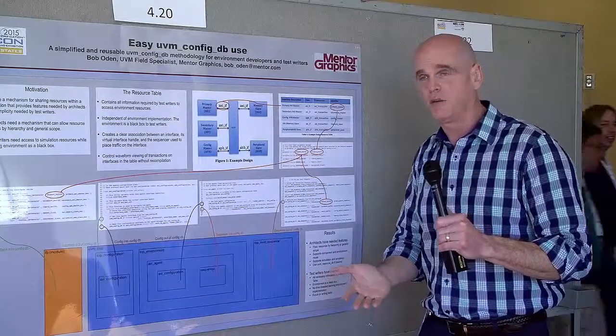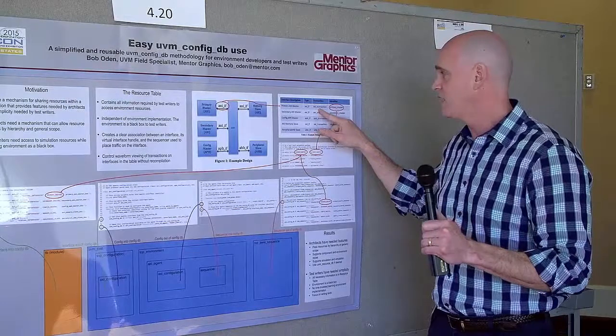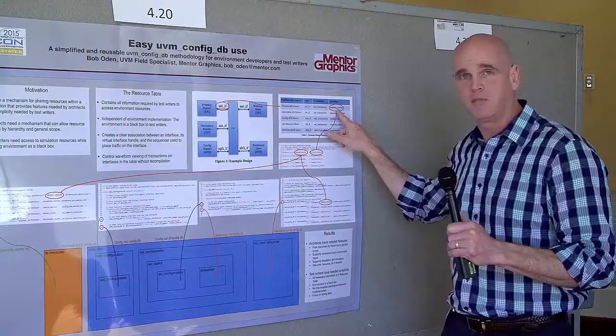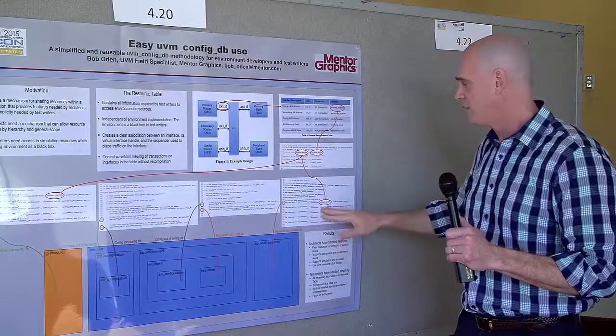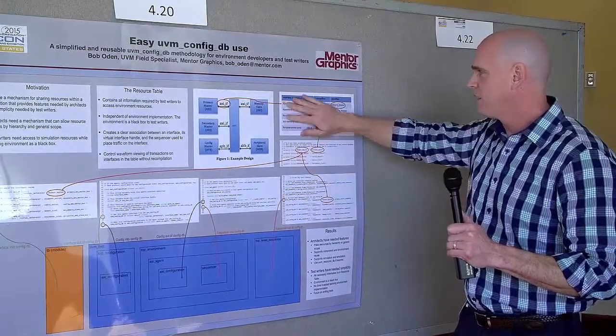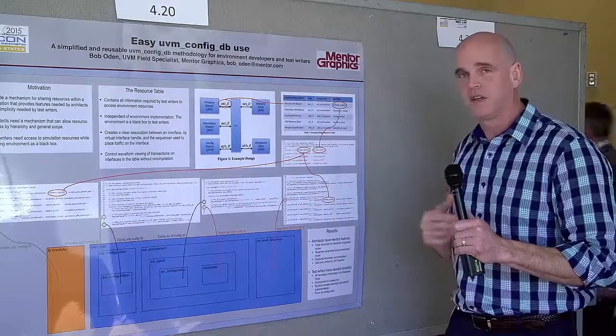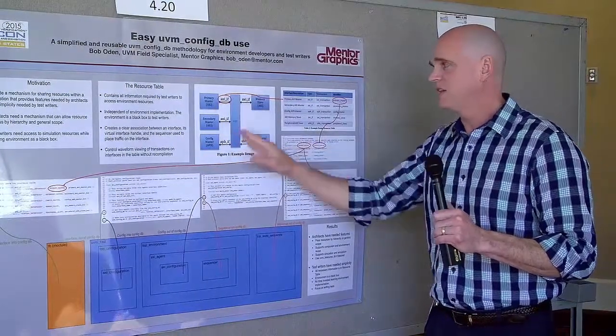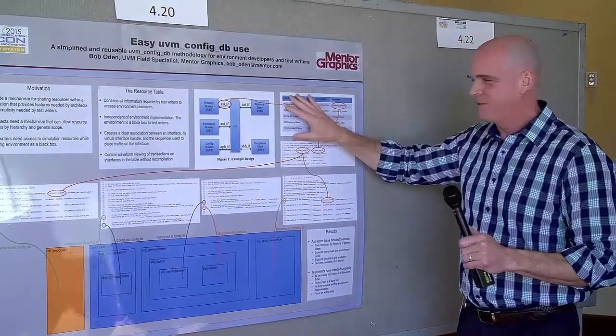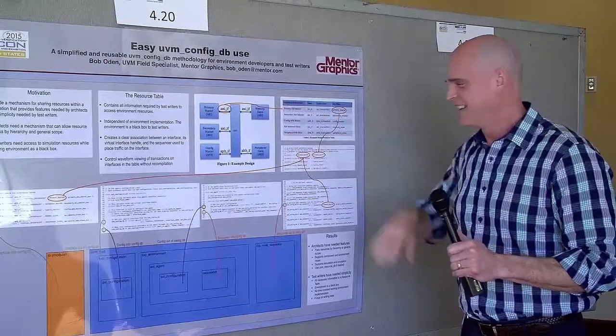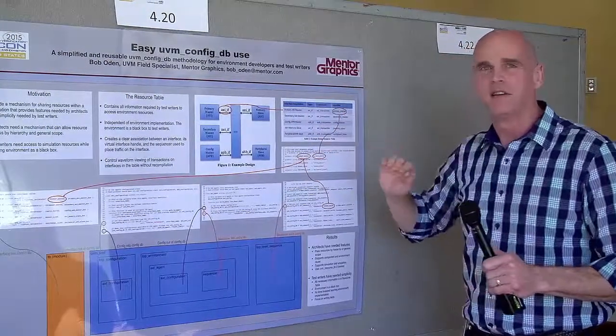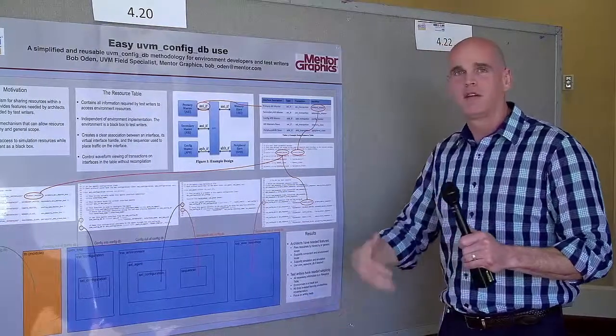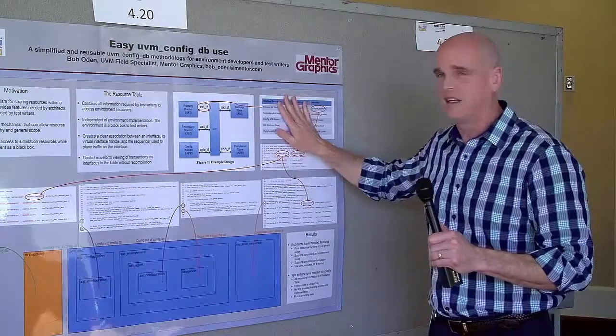the general scope that's used for all sequencers. The type that he'll be retrieving is a UVM sequencer typed to the transaction column entry. And then he'll use for the field name the unique identifier within the get call. So at that point, the test writer has all the information needed in the table to retrieve any sequencer handle needed for a sequence, as well as gaining access to any virtual interface handle from the test case. All from the information that's on the resource table here. So what that allows test writers to do is start creating tests without knowing anything about the environment so that they can spend their time writing tests rather than learning the environment. Because all the information they need is in the table.